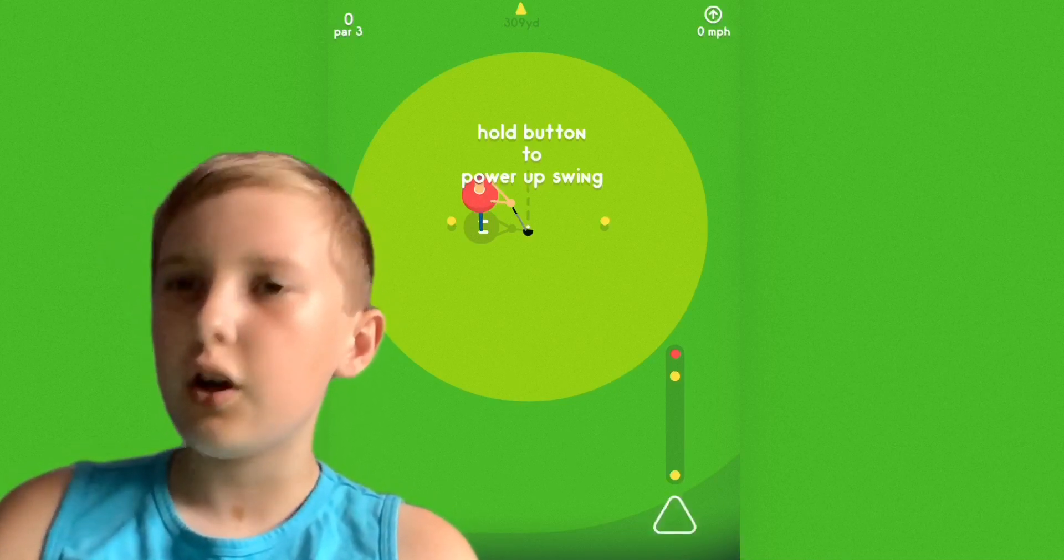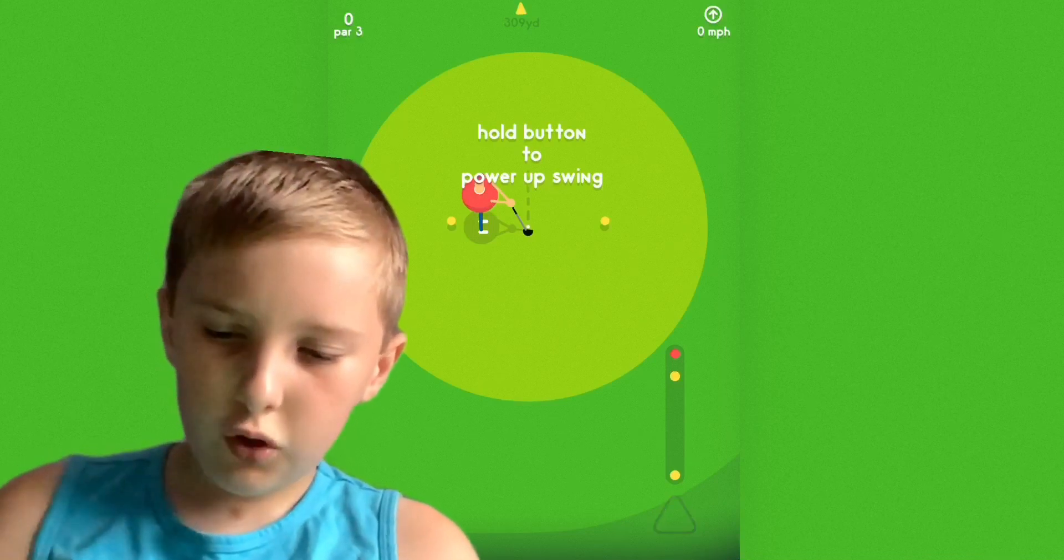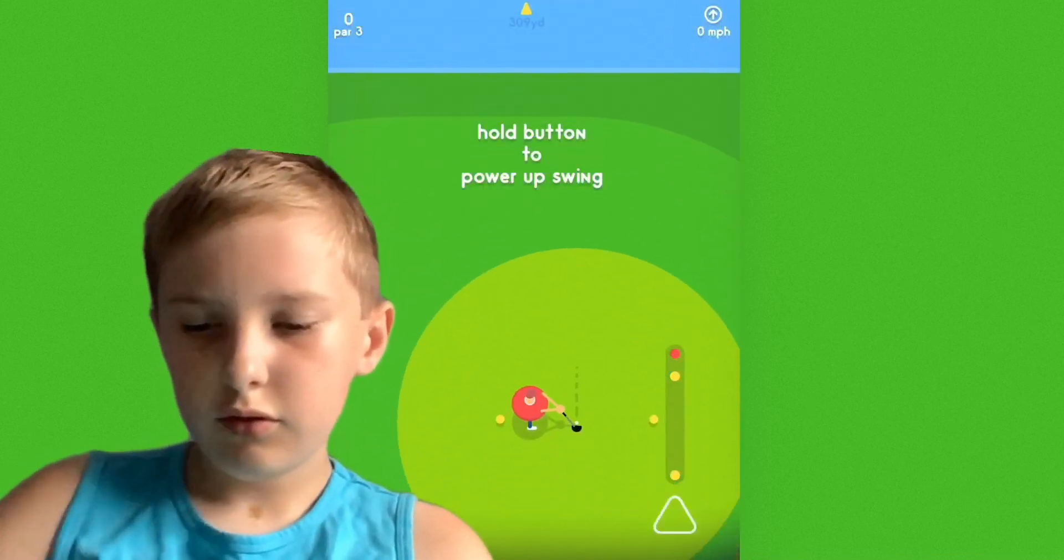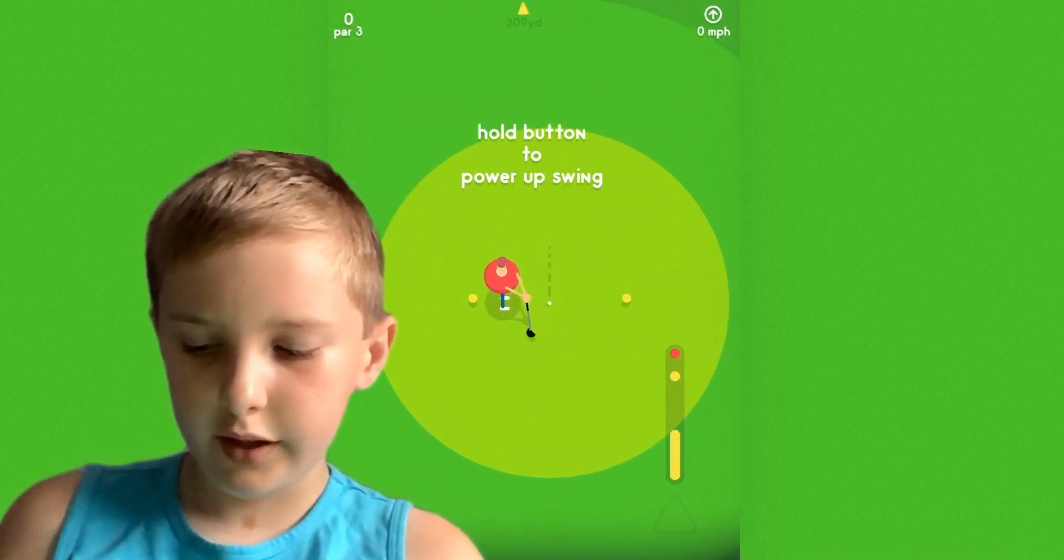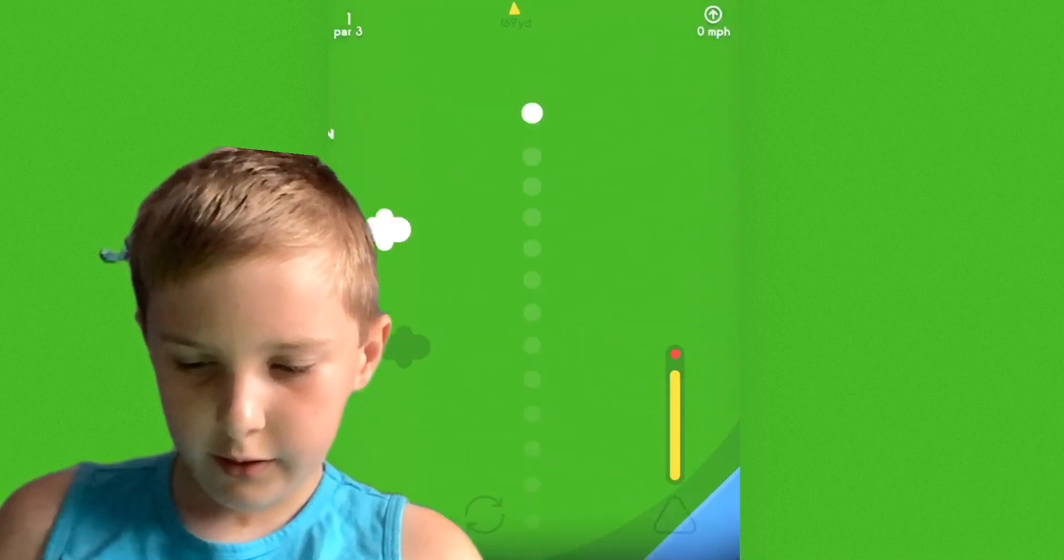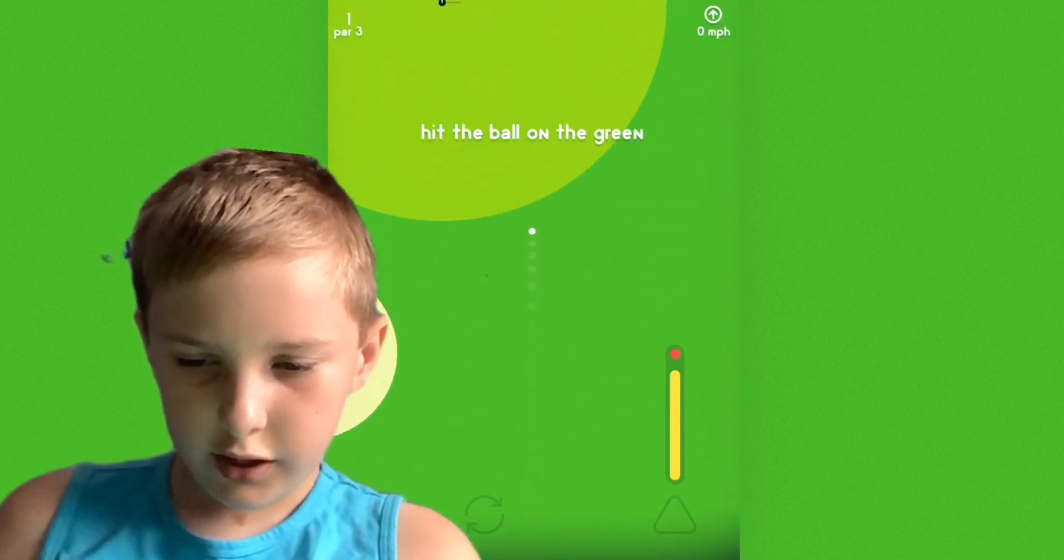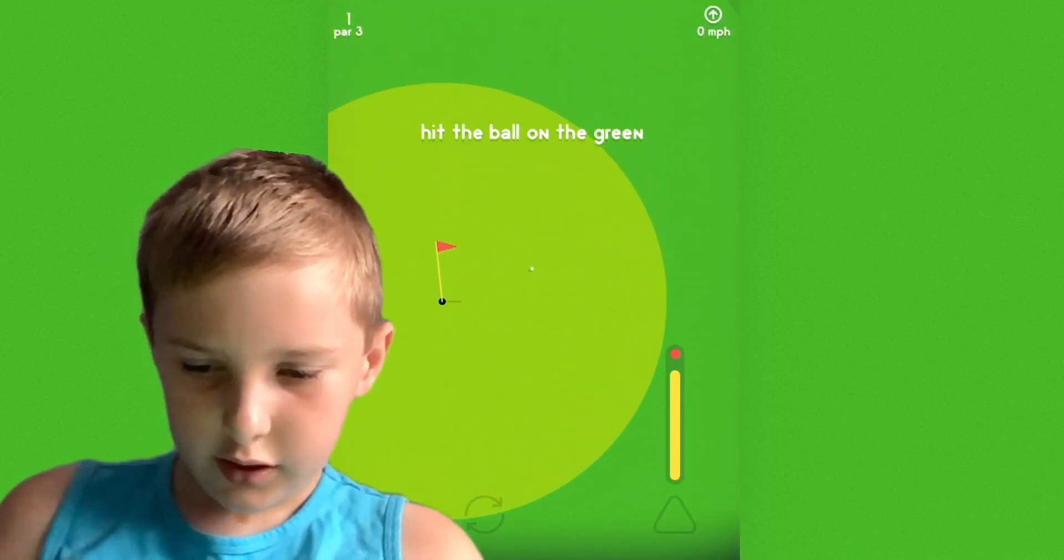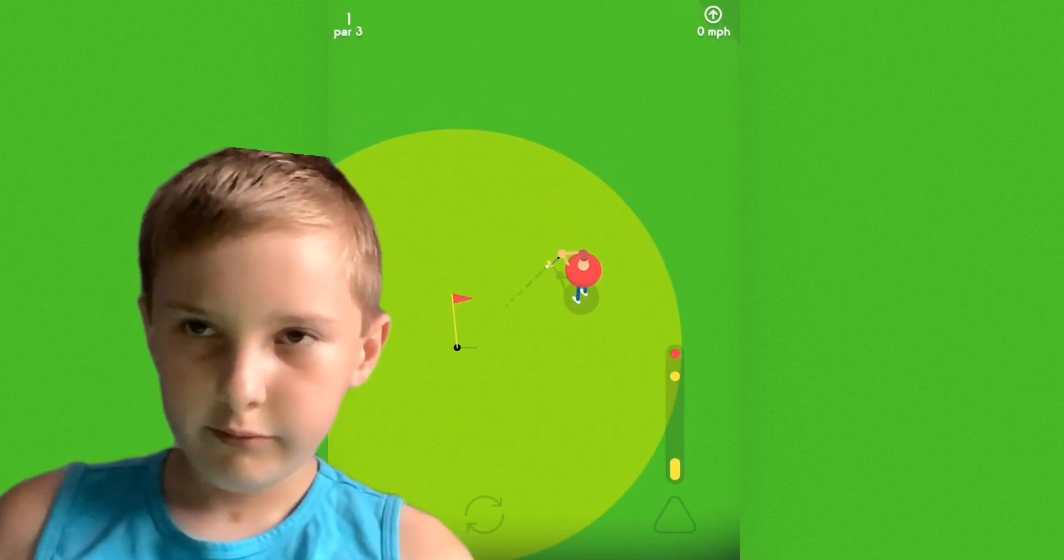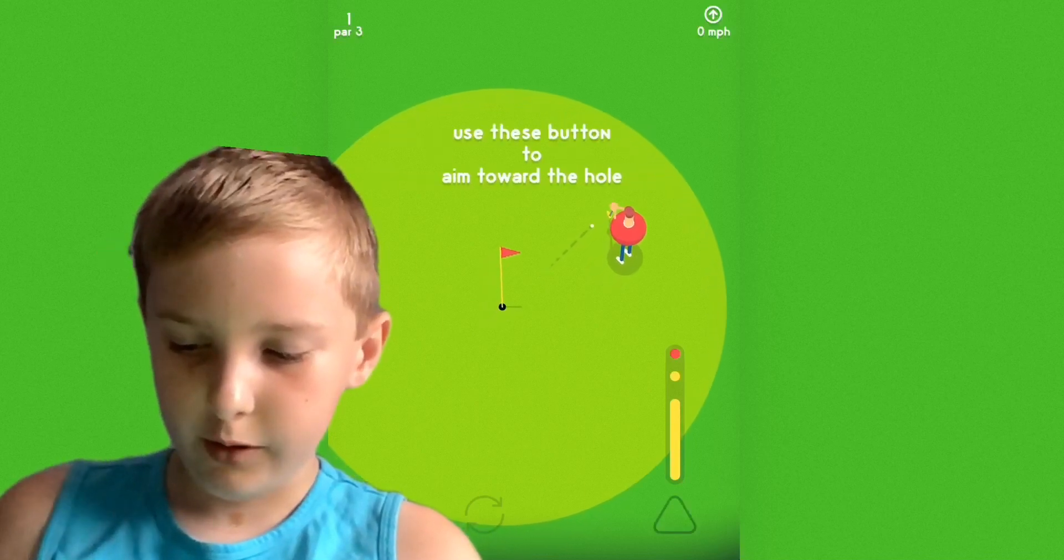Golfing Around, a picture golfing around yet. Hold button to power up swing. Hold button, power up. Okay, hit the ball on the green. I'm on the green. So I've never played this game before. I had it downloaded, but I've never played it before.